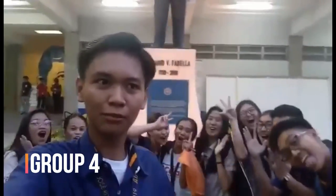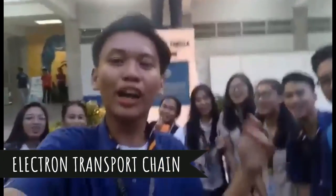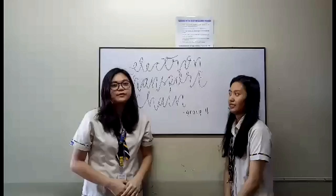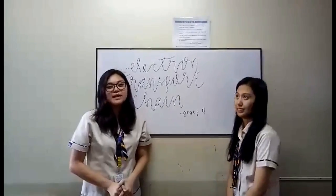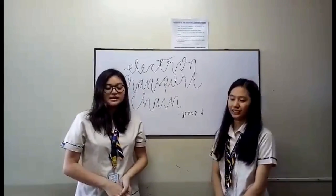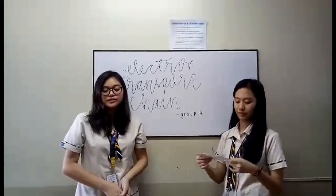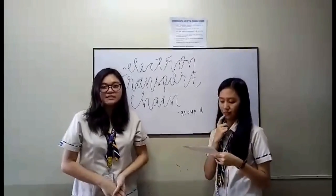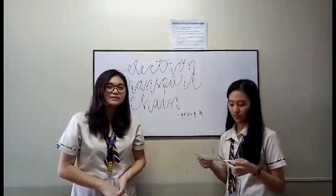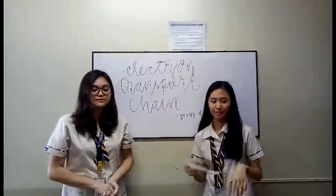Hey guys, welcome to our video. We are talking about Electron Transport Chains. After having the glycolytic and Krebs cycle, we now have Electron Transport Chains. The Electron Transport Chain is a process of proton transfer through electrons across membranes inside mitochondria to make a gradient of protons that create ATP, or adenosine triphosphate.